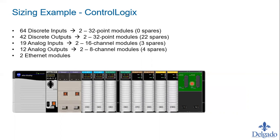You could also condense by using 32-point input modules. Before we had a 17-slot chassis; now we could bring that down to a 12-slot chassis using 32-point cards — two input cards and two output cards each handling 32 points. This reduces the physical space needed. So if you're physically constrained in your panel, this solution would be a much better fit.